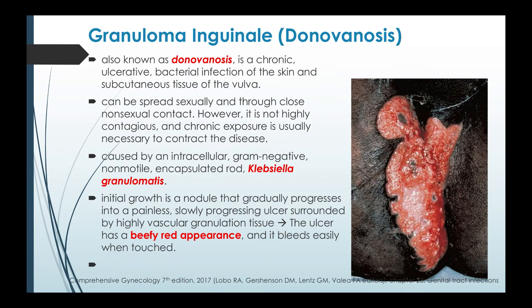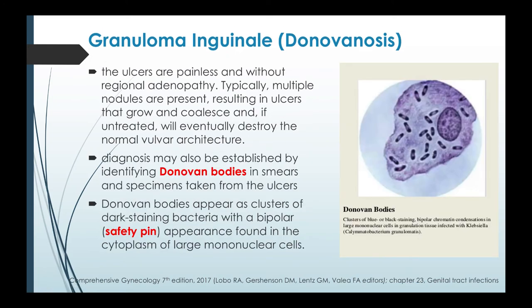Next we have granuloma inguinale, also called donovanosis. This is a chronic ulcerative bacterial infection of the skin and subcutaneous tissue of the vulva. It can be spread sexually and through close non-sexual contact; however, it is not highly contagious and chronic exposure is usually necessary. It is caused by an intracellular gram-negative non-motile encapsulated rod, Klebsiella granulomatis. The initial lesion is a nodule that gradually progresses into a painless, slow-progressing ulcer surrounded by highly vascular granulation tissue. The ulcer has a beefy red appearance and bleeds easily when touched.